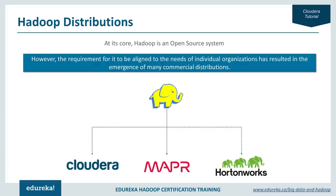GNU Linux is the base version of Linux, whereas Linux distributions have multiple added functionalities and features on top of it. The same applies to Hadoop distributions. Apache Hadoop is the base version, and companies like Cloudera, MapR, and Hortonworks took the vanilla version and added features related to UI, security, and monitoring. They released their own Hadoop distributions and are also providing commercial support for their respective distributions.